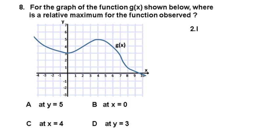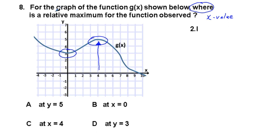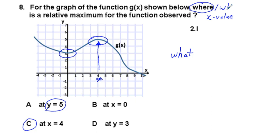Problem 8: For the graph of g(x), where is the relative maximum observed? We have a relative minimum at x = 0 and a peak representing a relative maximum. 'Where' means x value. That relative maximum occurs at y = 5, but where it occurs is at x = 4. Remember: 'what' usually means y value, while 'where' and 'when' usually mean x value.